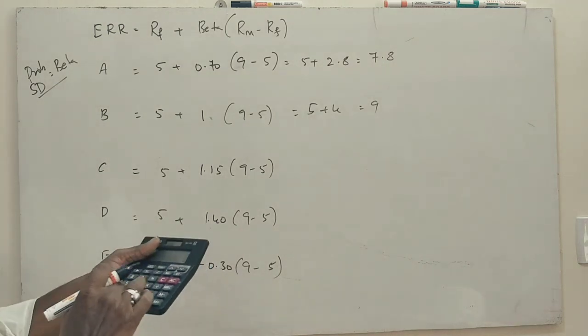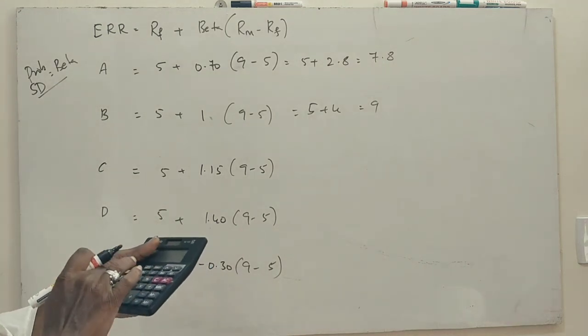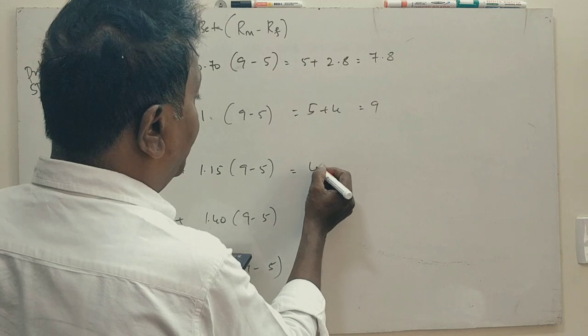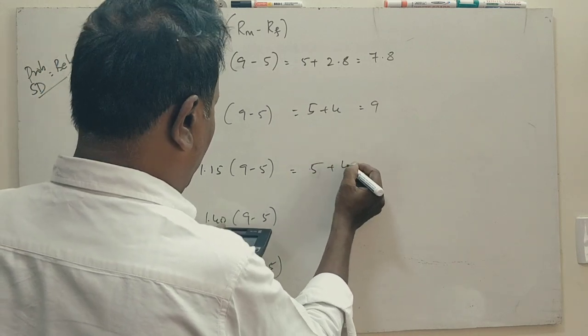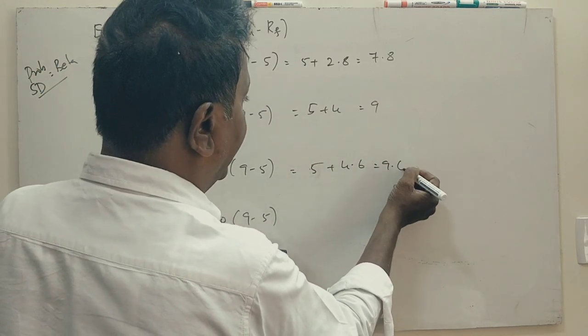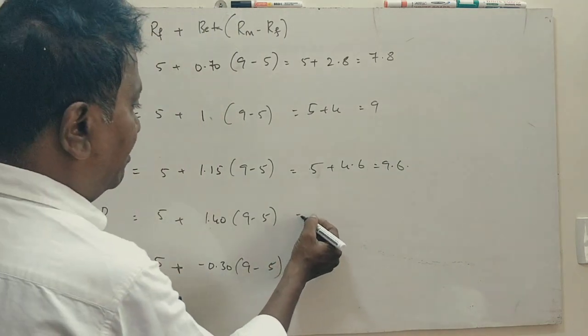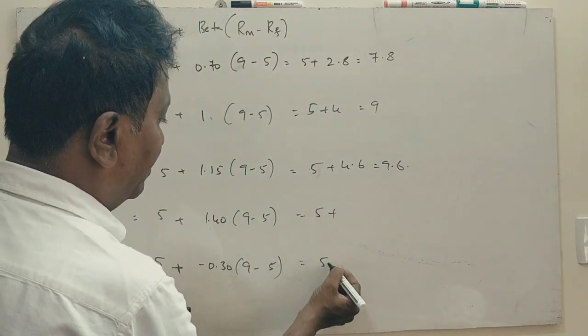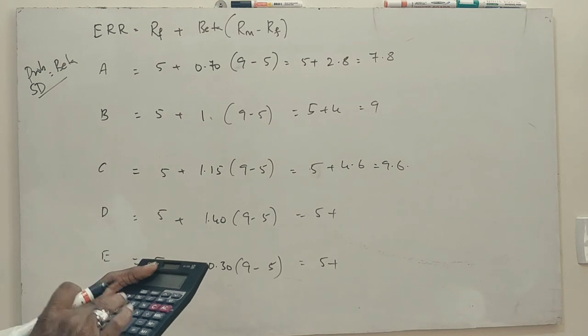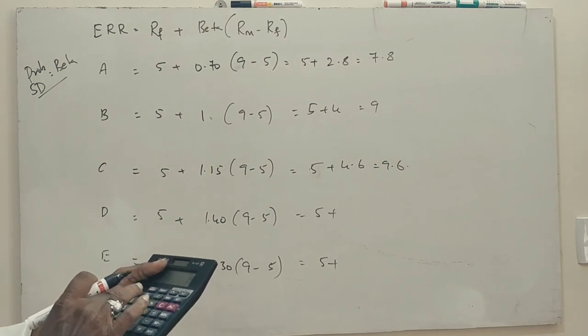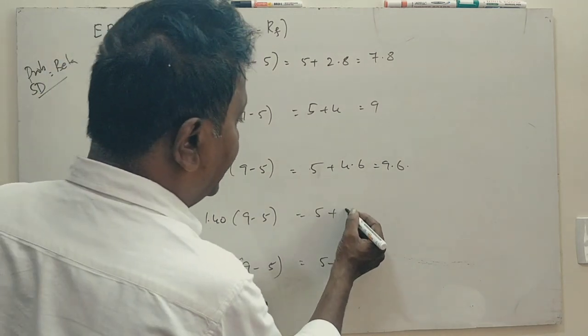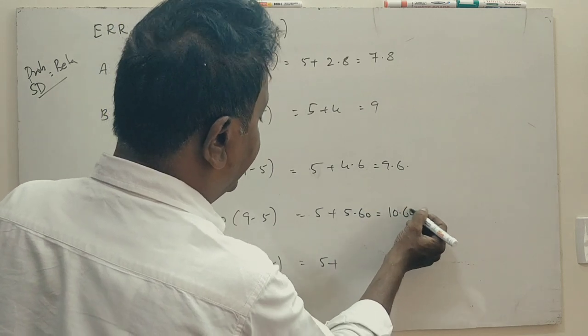Here, 5, 1.15 into 4 is 4 plus, sorry, 5 plus 4.6 is 9.6. Here, 5 plus, so, 1.4 into 4, 5.6 is 10.60.